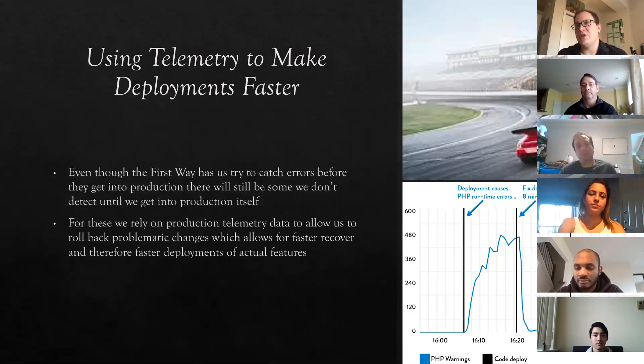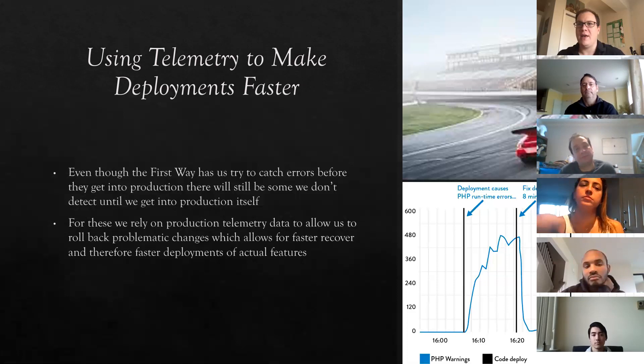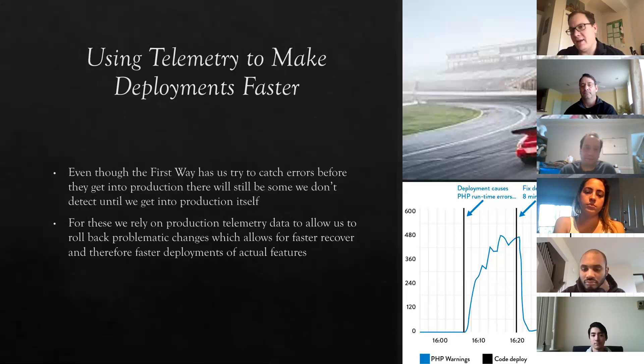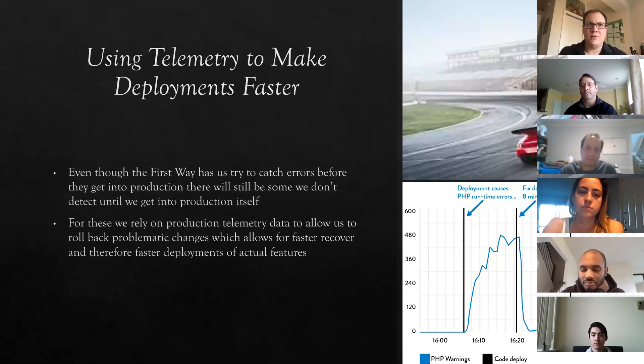In this example, somebody pushed a change up and it immediately started causing errors in the log. Because the developer who pushed that change had access to the log and was able to look at the information right after deployment, they were able to quickly see something was wrong and roll it back. By having that kind of information and depth of understanding, you're able to actually get the features you want up in production in working condition faster.